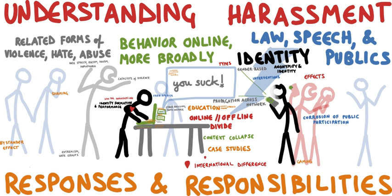Crimes that use computer networks or devices to advance other ends include fraud and identity theft, although this increasingly uses malware, hacking or phishing, making it an example of both computer as target and computer as tool crime. Other examples include information warfare, phishing scams, spam, and propagation of illegal, obscene or offensive content, including harassment and threats. The unsolicited sending of bulk email for commercial purposes is unlawful in some jurisdictions. Phishing is mostly propagated via email. Phishing emails may contain links to other websites that are affected by malware, or they may contain links to fake online banking or other websites used to steal private account information.